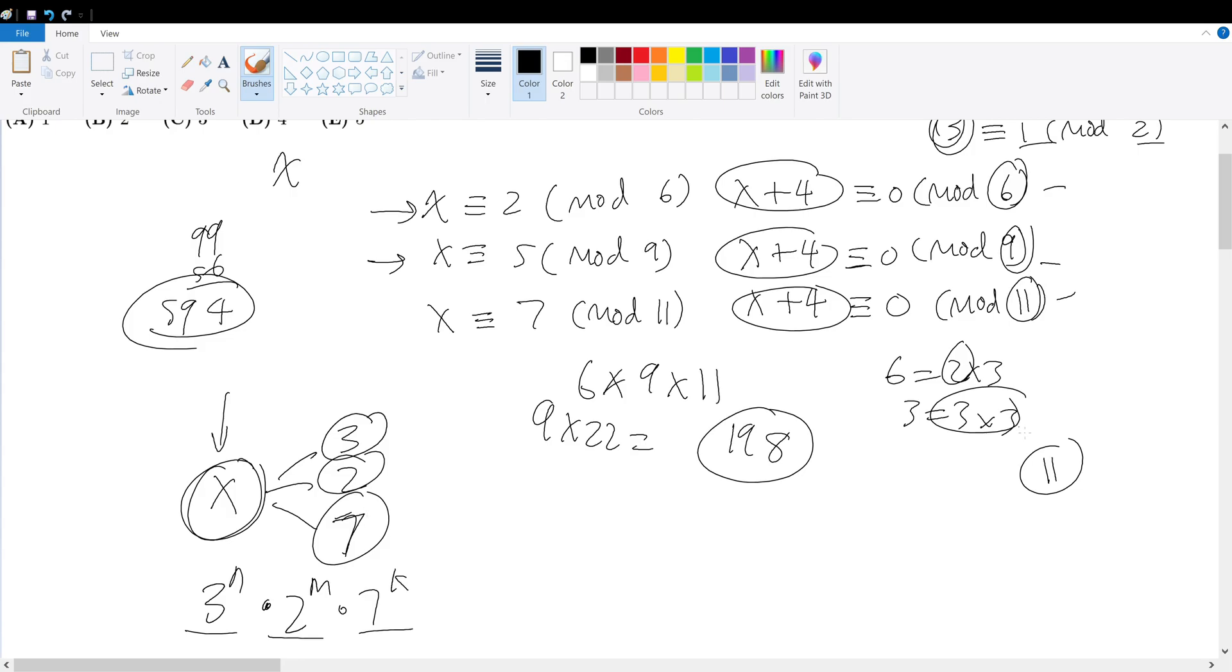So that's the reason why I can say that I can multiply 6 times 11. Because x plus 4 must have a factor of 6. It must have a factor of 9. It must have a factor of 11 in order for it to be congruent to 0, meaning it evenly divides out.